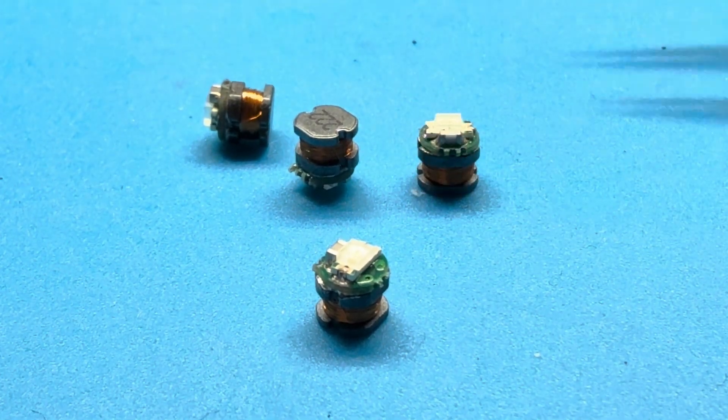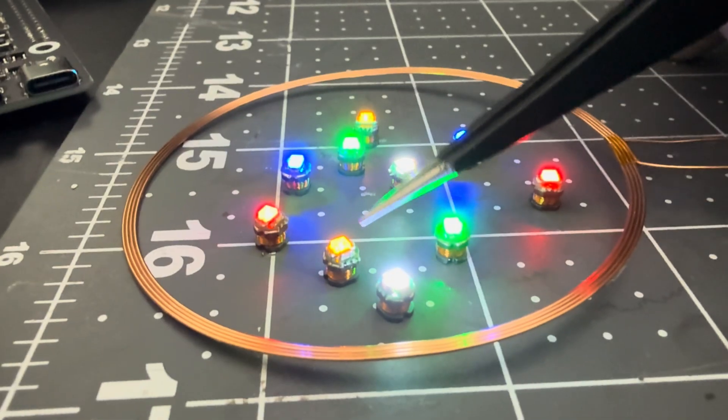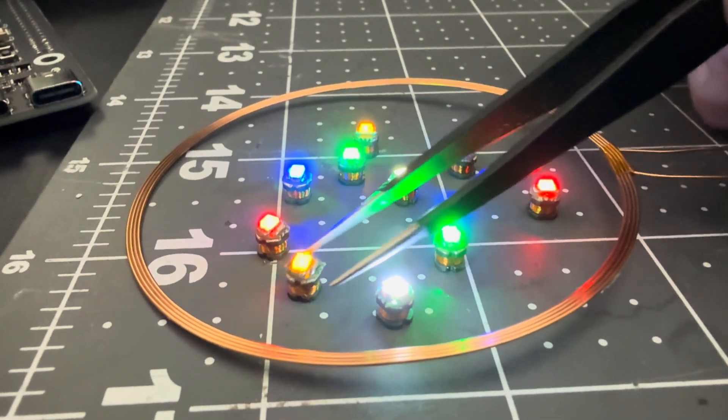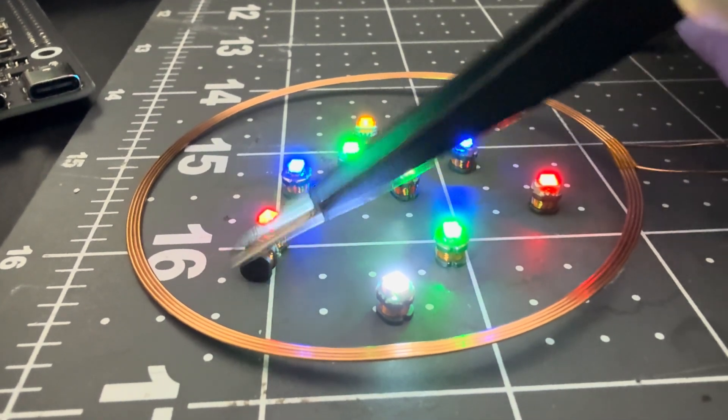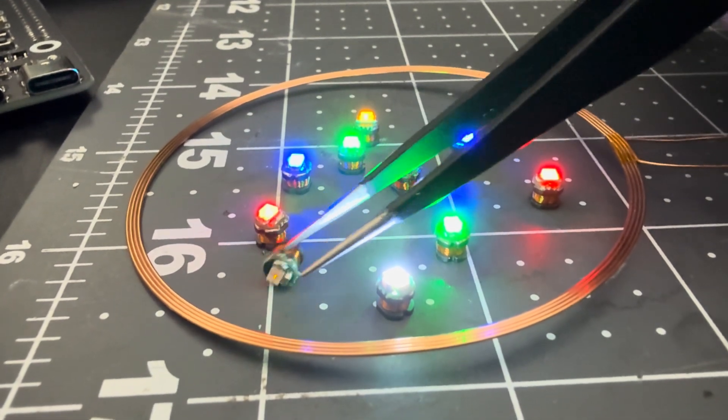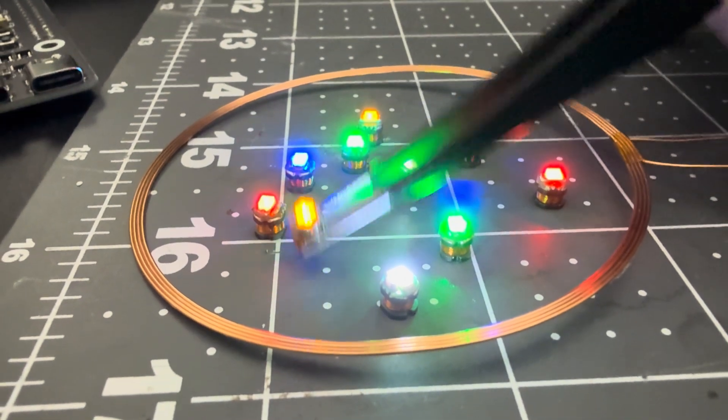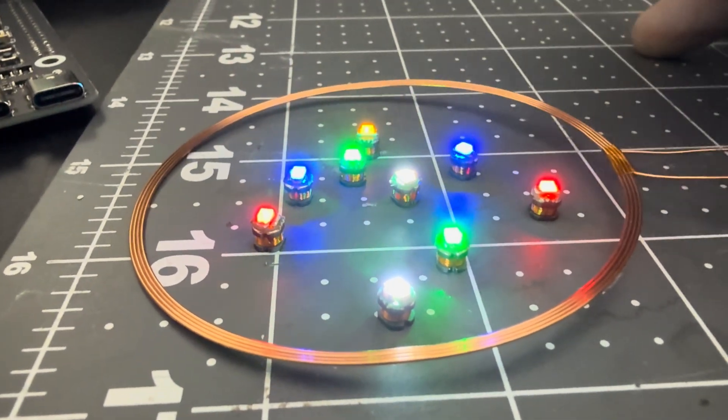There's also a little capacitor on that board for tuning purposes. You get an inductor and a capacitor, and then you have a resonant frequency. I'm sure that capacitor was selected for the frequency of this transmitter.